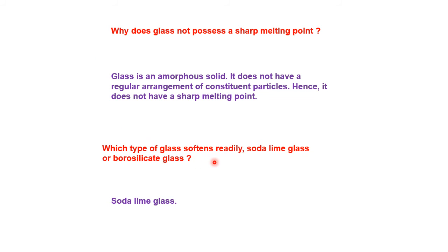Which type of glass softens readily — soda lime glass or borosilicate glass? It is soda lime glass. The name borosilicate itself indicates it contains boron and silicate. Silicon is a part of sand, SiO2. Sand is very hard. When sand and boron compounds are fused together in a furnace, we get borosilicate glass, which is very hard, and requires a lot of energy to soften. Whereas soda lime glass contains normal calcium compounds and other compounds, so it softens readily compared to borosilicate glass. Borosilicate glass is heat resistant, and therefore such glass is used for making hard glass tubes, beakers, and round-bottom flasks where heating experiments are performed.